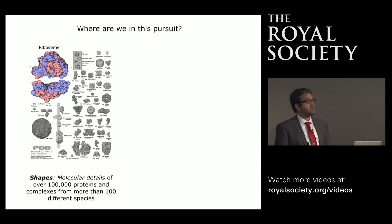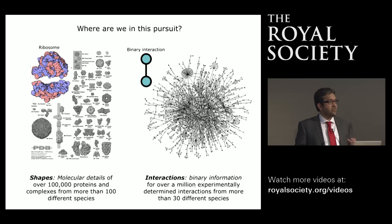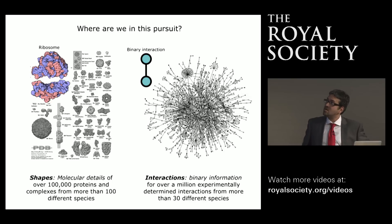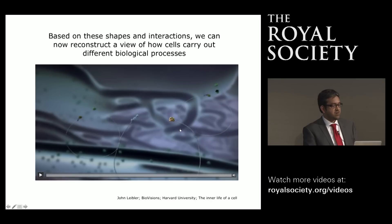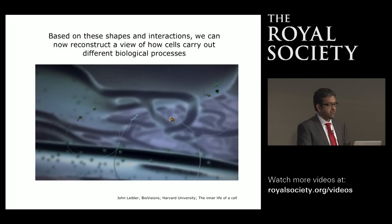Where are we in this pursuit to understand shapes and interactions? In terms of shapes, we have molecular details of more than 100,000 different proteins or protein complexes from over 100 different species—for example, the structure of the ribosome. In terms of interactions, we have binary information for more than a million experimentally validated interactions from proteins across over 30 different species. Scientists have put together a view of how cells carry out different biological processes, and I'd like to play a short video highlighting how proteins with different shapes come together in the cell to carry out a particular function—showing how the ribosome makes a protein, which then detaches, finds the right interaction partner, and gets taken to a particular location in the cell.